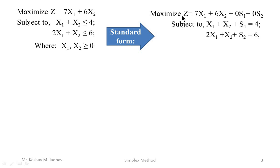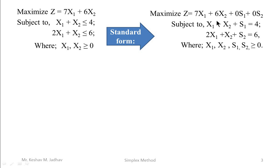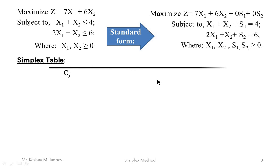So the objective function can be written as: maximize z equal to 7x1 plus 6x2 plus 0s1 plus 0s2. Similar to x1 and x2, non-negativity constraints are also applicable for slack variables s1 and s2. So we can write x1, x2, s1 and s2 are greater than or equal to 0. This is the standard form of the linear programming problem. After converting the linear programming problem into standard form, we can go for the simplex table.